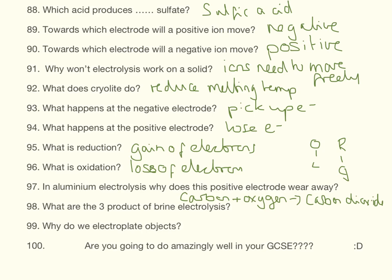What is reduction? Reduction is the gain of electrons. In aluminium oxide, why does the positive electrode wear away? Because it is made of carbon that reacts with the oxygen to produce carbon dioxide, which is a gas and just floats off into the air. What are the three products of brine electrolysis? They are hydrogen, chlorine, and sodium hydroxide. And why do we electroplate objects? For many reasons — one I'm quite fond of is for use in jewellery.